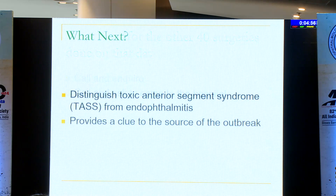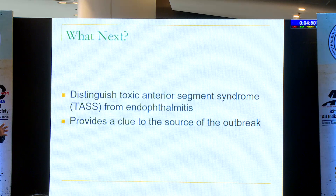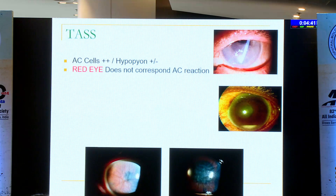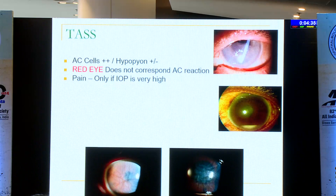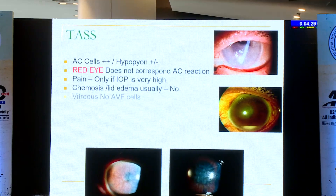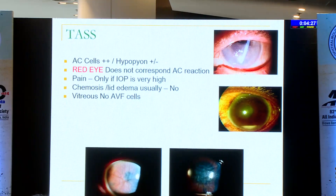Then assess. You have to distinguish whether it is TAS or endophthalmitis. In TAS, there may be hypopyon and obviously there will be AC cells, but the congestion doesn't correspond to the AC reaction. Normally these people don't have pain unless the IOP is very high. Normally they don't have chemosis or lid edema, and vitreous cells won't be there.